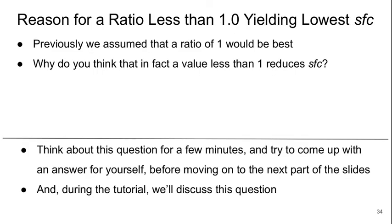Finally, I'd like you to think about why a bypass-to-core jet velocity ratio of less than 1 actually yields the lowest specific fuel consumption. Previously, we were thinking that 1 would be the best — so why would something less than that actually reduce the specific fuel consumption? Think about this for a minute and try to come up with an answer for yourself before you move on to the next part of the video.